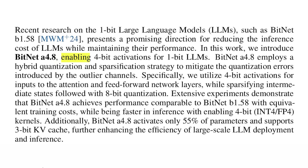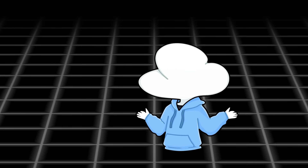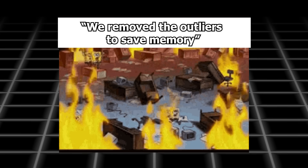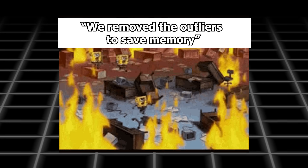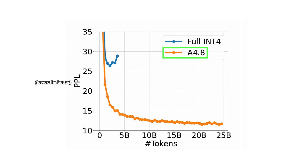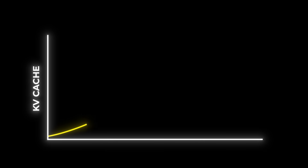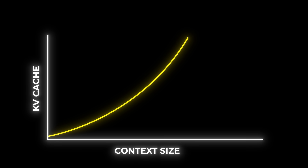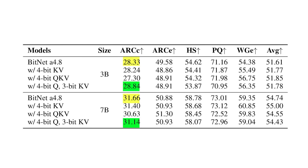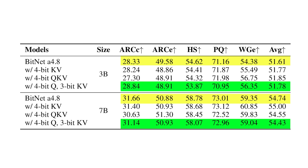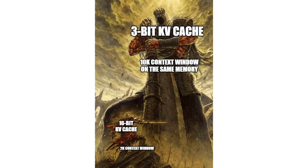In this research called BitNet A4.8, it uses 4-bit activations for attention and feedforward network inputs, while utilizing sparsification with 8 bits for intermediate states like attention outputs. The 8 bits still have to exist there, or it will introduce quantization errors due to specific data distributions that usually include important outlier values. From their experiment, the performance gap between full INT4 and A4.8 is actually huge — demonstrating that 8-bit is extremely important, as INT4 alone does not even converge. BitNet A4.8 also introduces a 3-bit KV cache with barely any degradation in average accuracy.